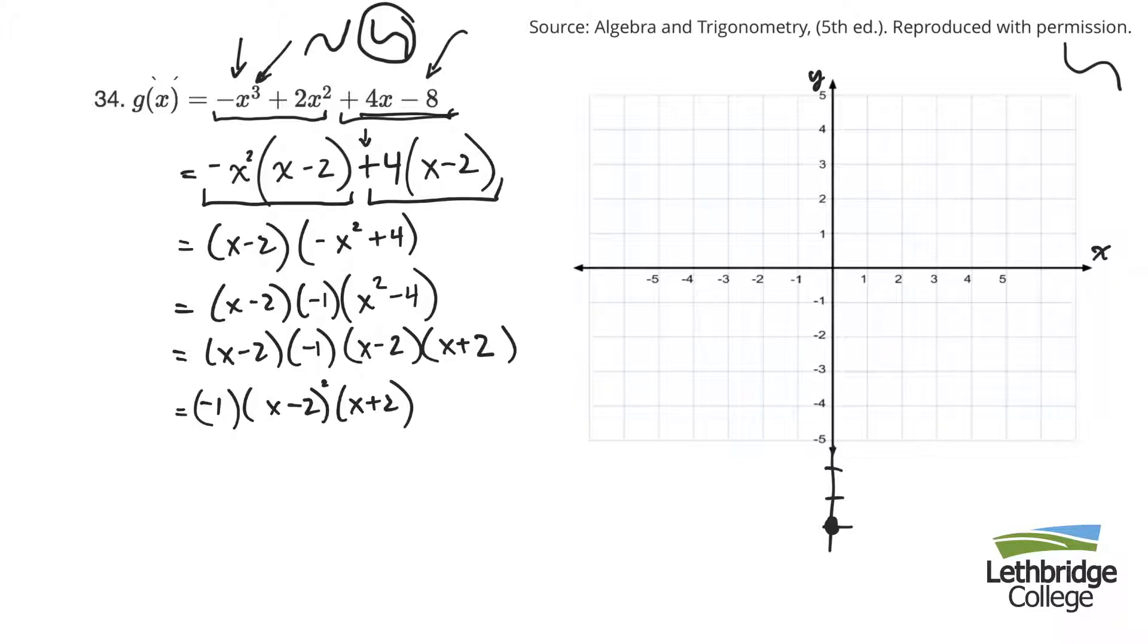Now, if I want to find the zeros, then I'm going to make g of x equal to 0. Then I can use the zero property to solve this. So either x minus 2 is 0, or x minus 2 is 0, or x plus 2 is equal to 0. You might find it funny that I do two of those, but if there's a multiplicity of 2, it means something on the graph. So for this one, I get x equals 2. This one, x equals 2. This one, x equals negative 2.